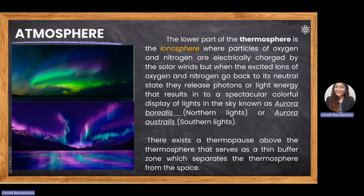The last layer of the atmosphere is the exosphere, the outermost layer of Earth. It extends from 700 to 2,000 kilometers above sea level. Most orbiting satellites are found in the exosphere, and Earth's gravity ends at the exosphere.